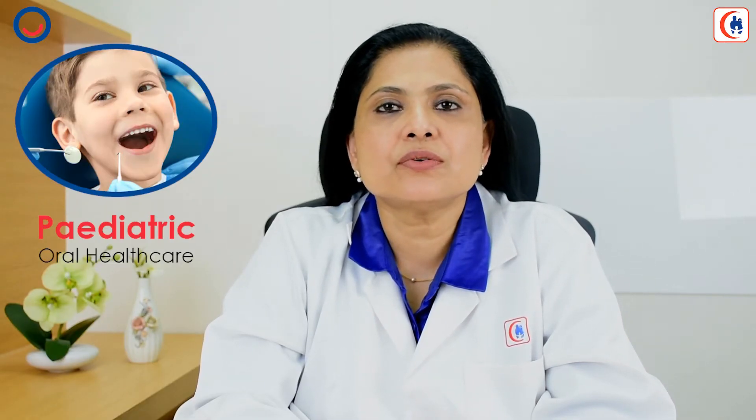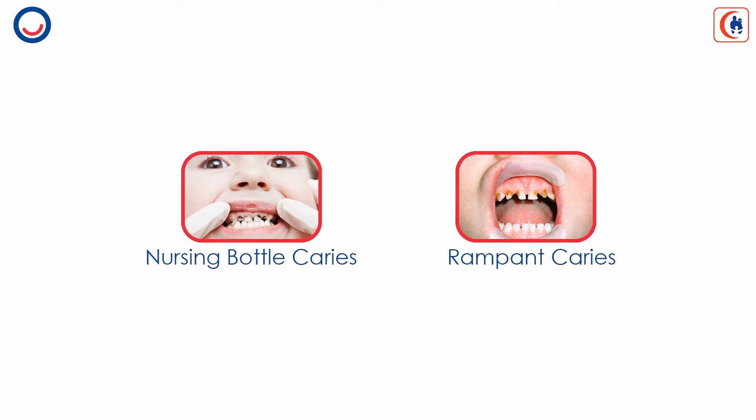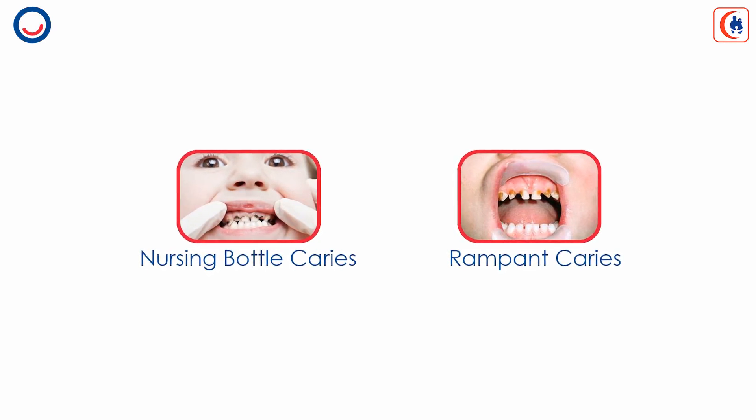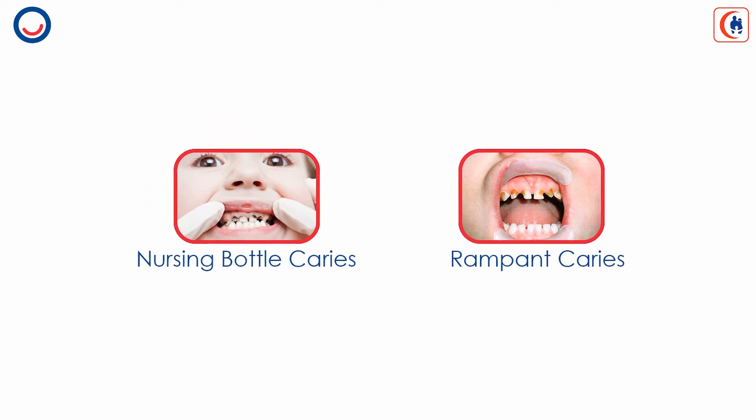Paediatric oral care starts around the age of 6 months when the first primary tooth erupts into the oral cavity. From this time until the child develops a proper brushing technique, it is the duty of the parents to make sure the oral cavity is clean. This can avoid problems like nursing bottle caries, which can be very painful and damaging to the dental and general health of the child.